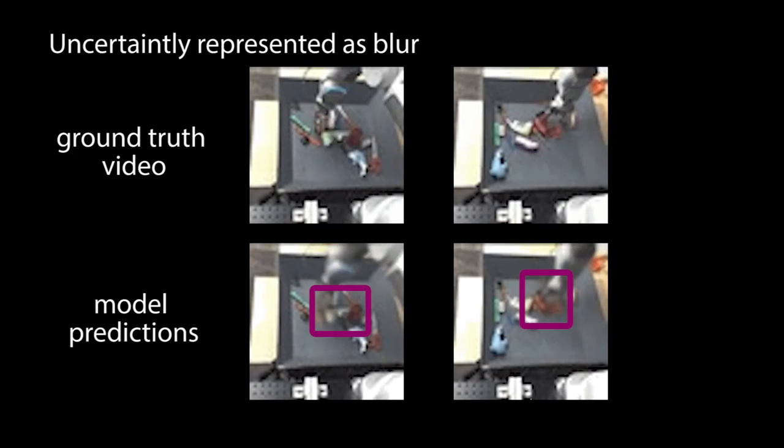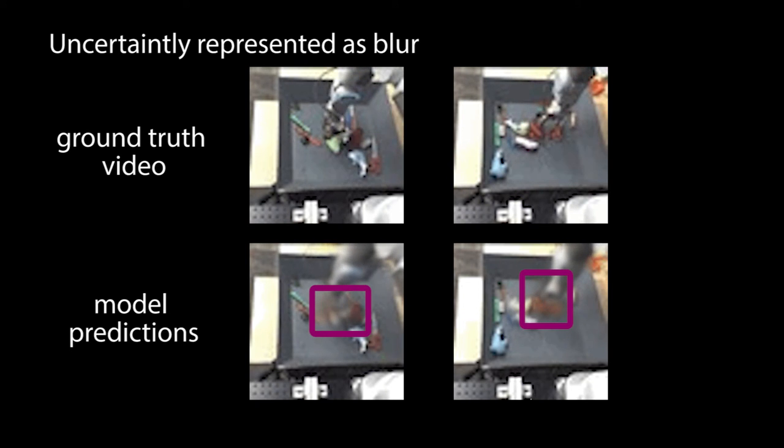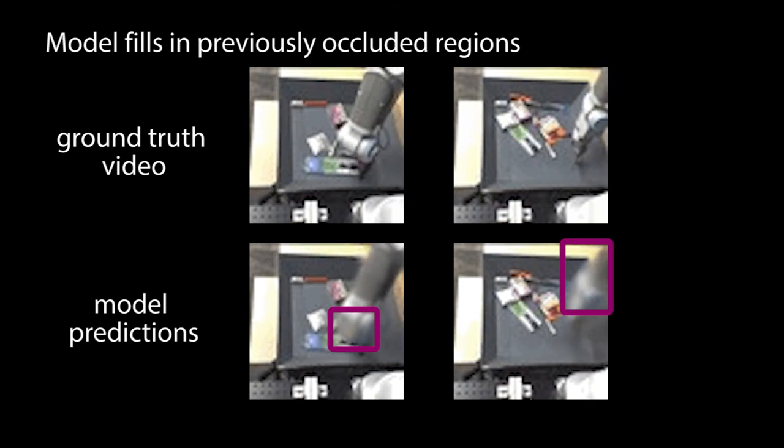Because the model is trained using a mean squared error objective, it represents uncertainty as blur. The model also has the capacity to make predictions about previously occluded regions and objects.